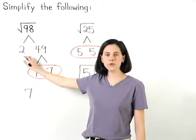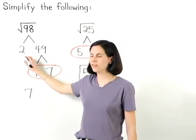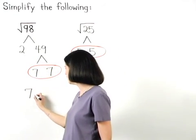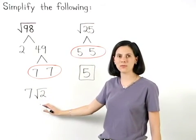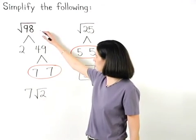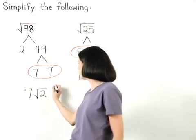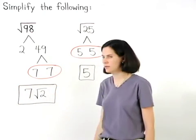And notice that we have a 2 in our factor tree that doesn't pair up. This means that a 2 stays inside the radical, which gives us 7 times the square root of 2. So the square root of 98 simplifies to 7√2.